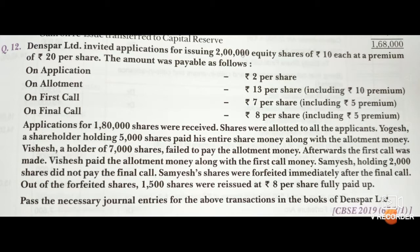Three shareholders are involved. Yogesh is the first shareholder who paid the entire share money with allotment money, so his call money will be advanced with the company before making the call. Vishesh is the second shareholder who failed to pay allotment money, creating arrears. But afterwards, the first call was made and Vishesh paid all allotment money with first call money. Shamesh, holding 2,000 shares, did not pay the final call, so his shares were forfeited. Out of forfeited 2,000 shares, 1,500 were reissued at Rs.8 per share fully paid up.